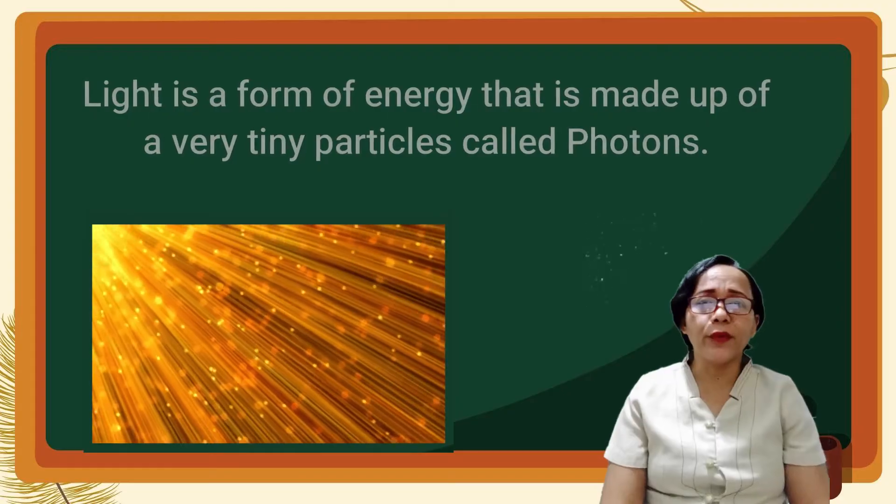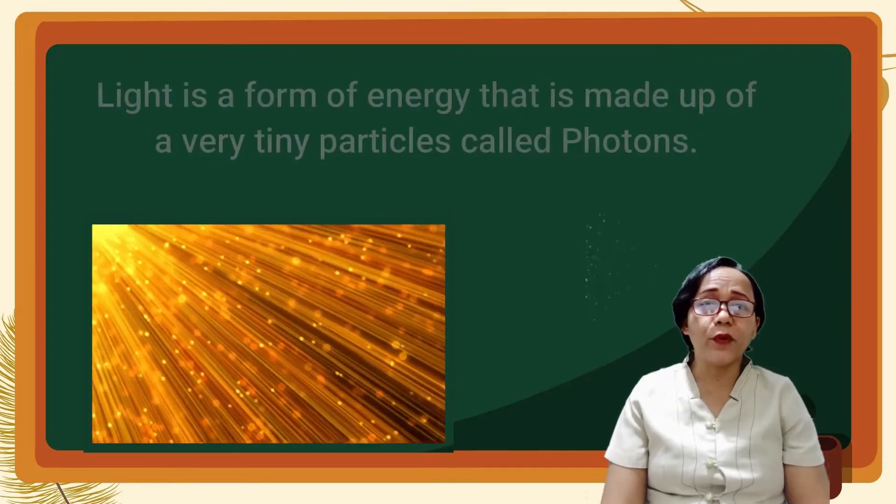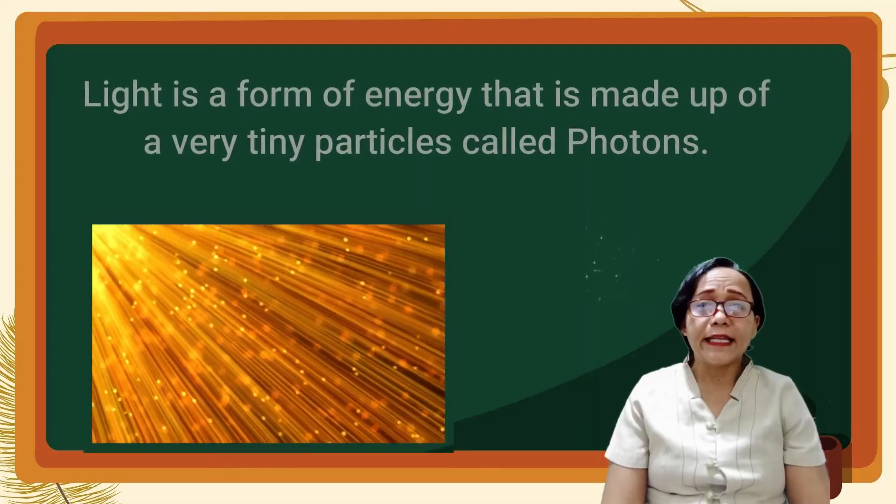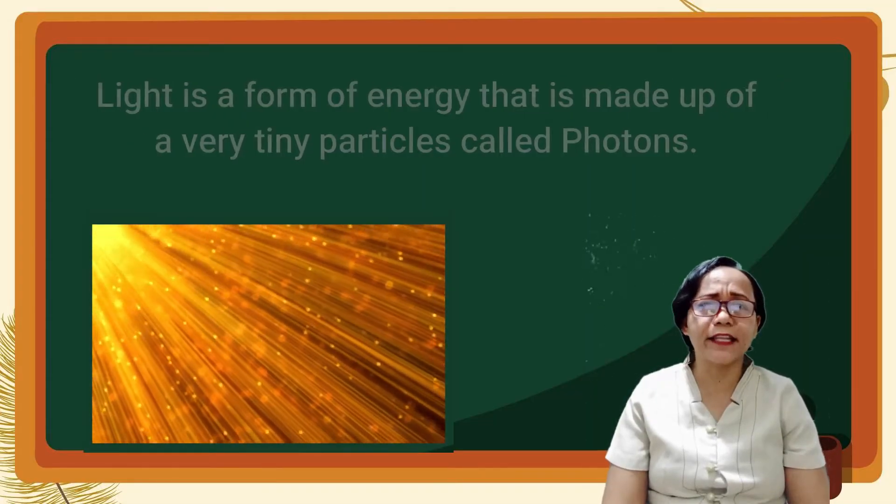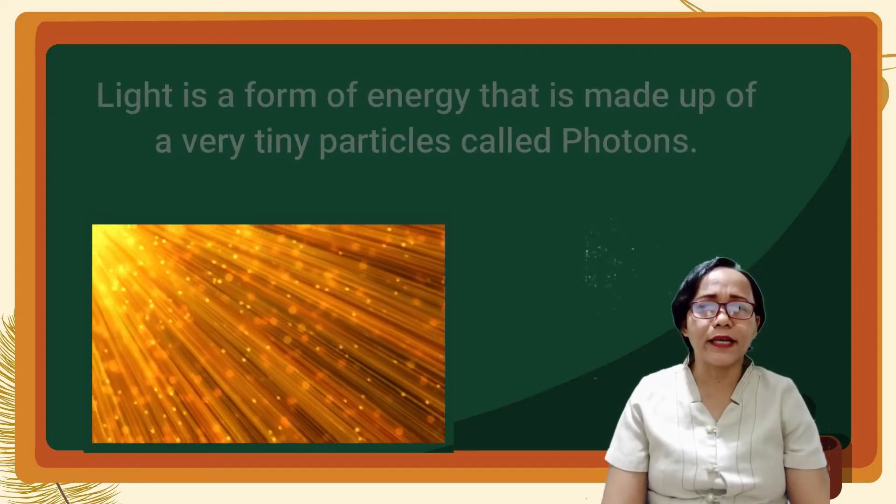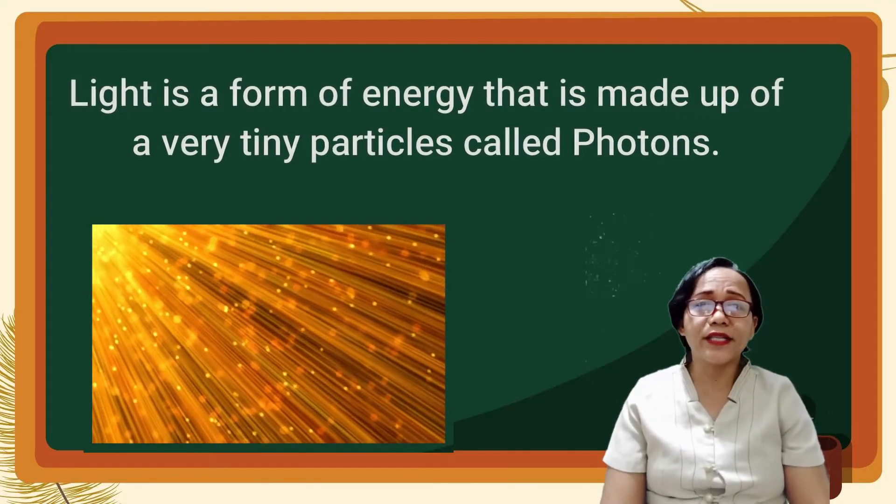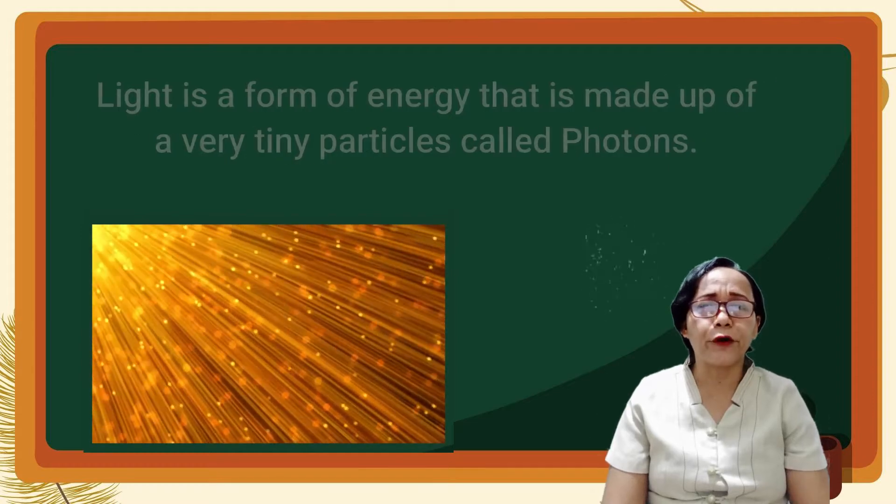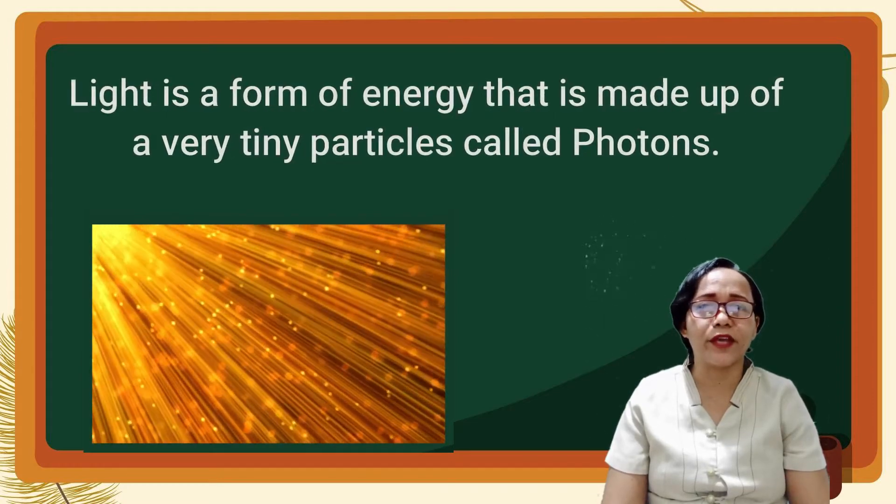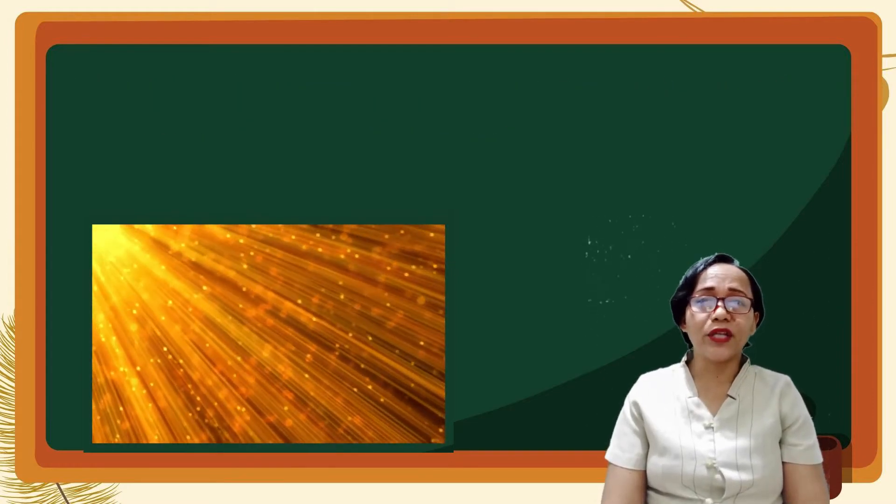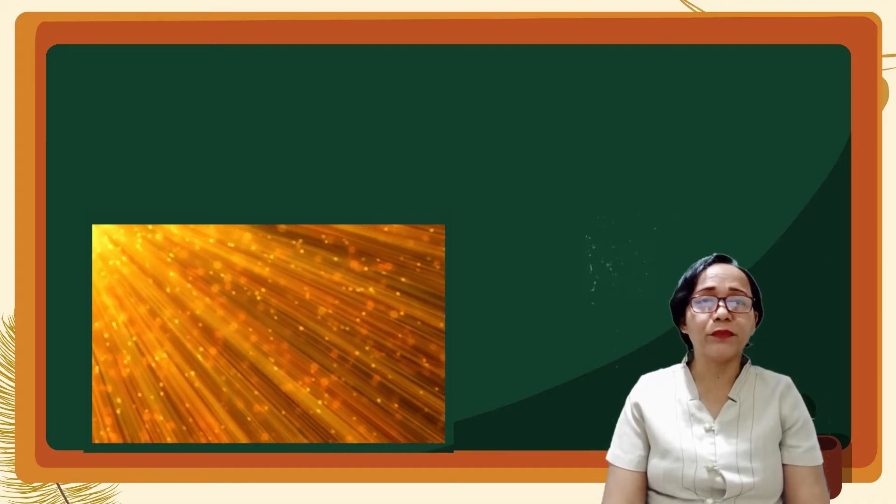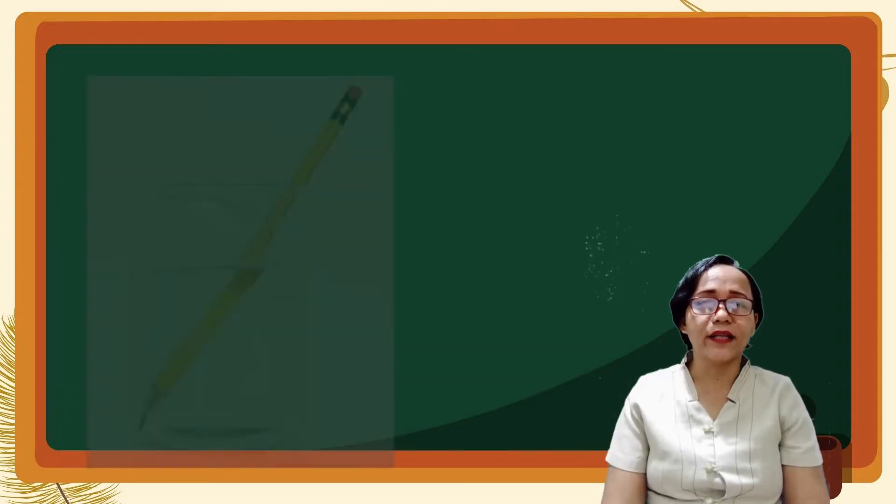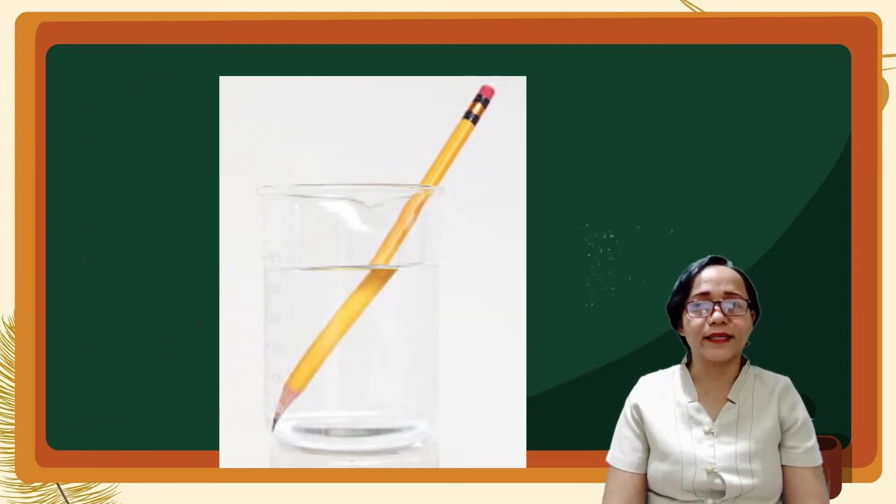Light is a form of energy that is made up of very tiny particles called photons. It is the fastest thing that moves in the universe. It travels at the speed of about 300,000 kilometers per second in a vacuum in a form of electromagnetic waves. It changes its speed when it passes through different materials like air and water. Light travels quickly in air and slowly in water and glass.